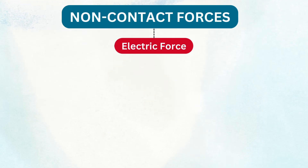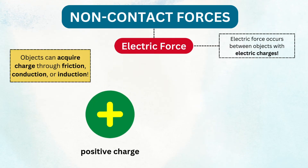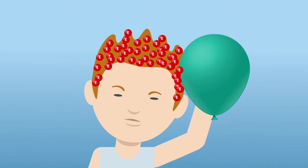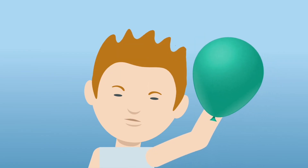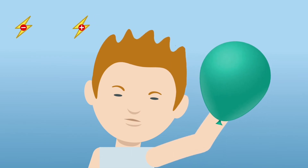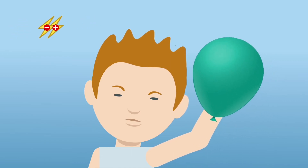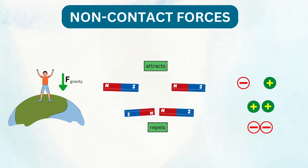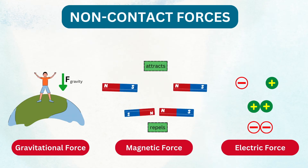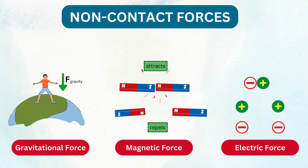And finally, we have electrostatic force, which occurs between objects with electric charges. Have you ever rubbed a balloon on your hair and watched it stand on end? That's electrostatic force at work. The negatively charged balloon attracts the strands of hair, creating that fun, spiky effect. These non-contact forces may be invisible, but they shape our world in ways we experience every day.